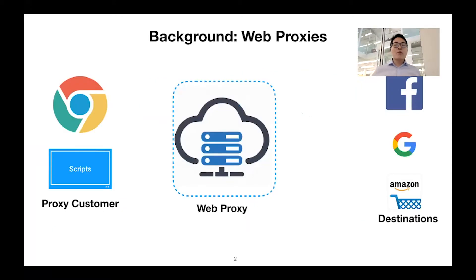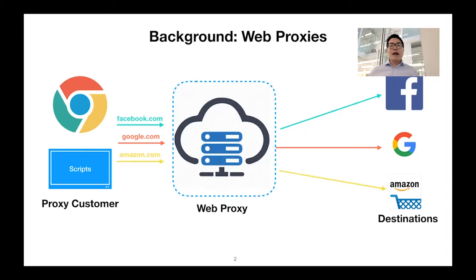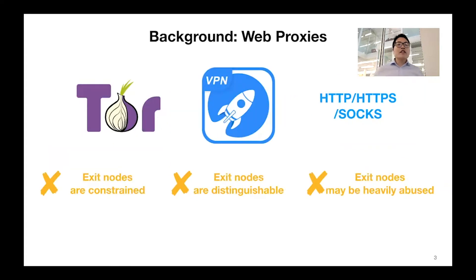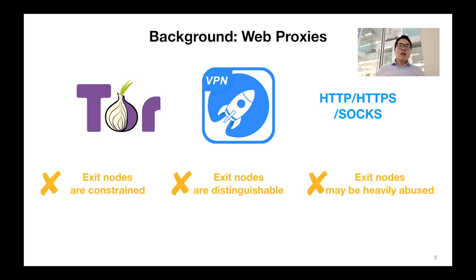Web proxies are commonly used in our daily life for different purposes, such as to evade censorship and to measure the effectiveness of mobile advertisements. There are a lot of different kinds of web proxies, such as the Tor network, commercial VPN networks, and also simple HTTP and SOCKS proxies. However, all those kinds of proxies have a set of limitations, especially they have a limited number of access nodes. Even for the Tor network, it has only tens of thousands of access relays.